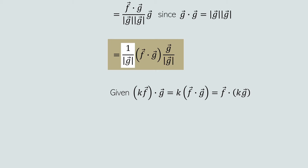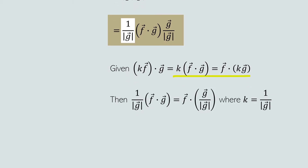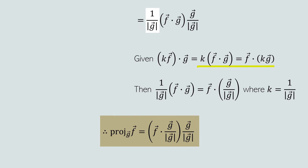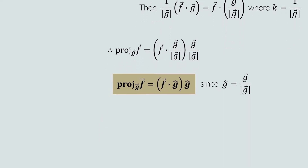Here, one over magnitude of g is a scalar factor of the dot product of vectors f and g — in other words, k equals one over magnitude of g. Using the special property of dot products, one over magnitude of g times f dot g is equivalent to f dot g over magnitude of g. Therefore, the projection of f onto g equals f dot g over magnitude of g times g over magnitude of g. Finally, since g over the magnitude of g is the definition of the unit vector of g, the projection of f onto g equals f dot g-hat times g-hat.